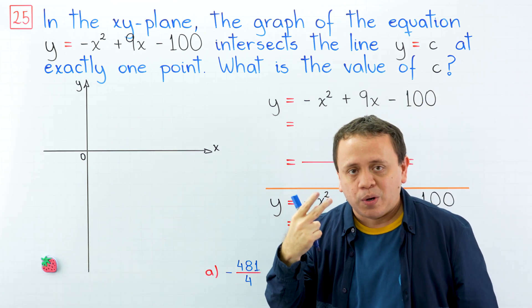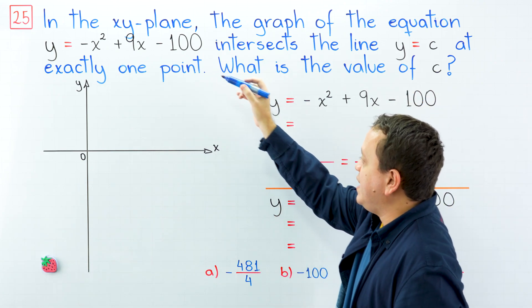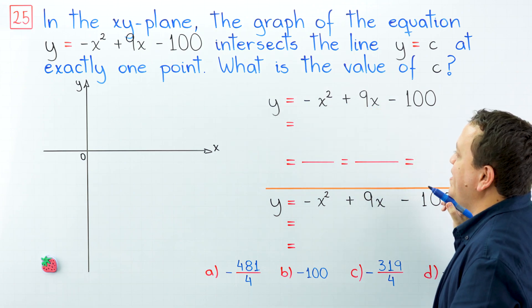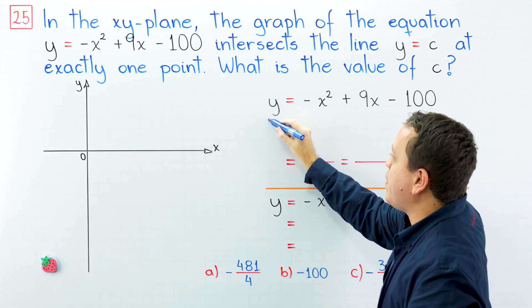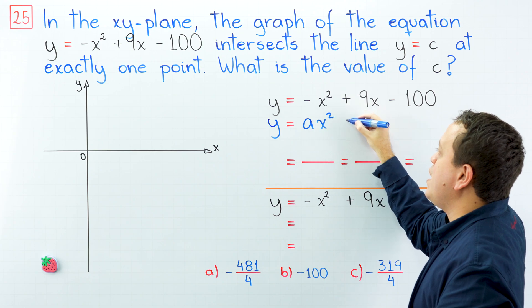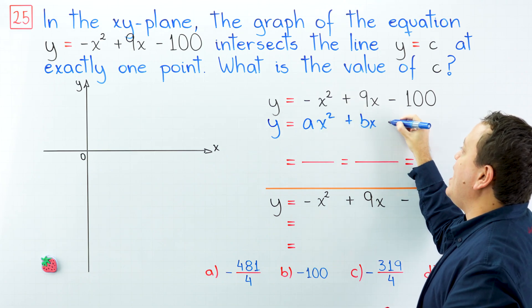In this problem, we have two equations. Let's focus on the first one, that is y = -x² + 9x - 100. This is a quadratic equation, and the general form of a quadratic equation is y = ax² + bx + c.